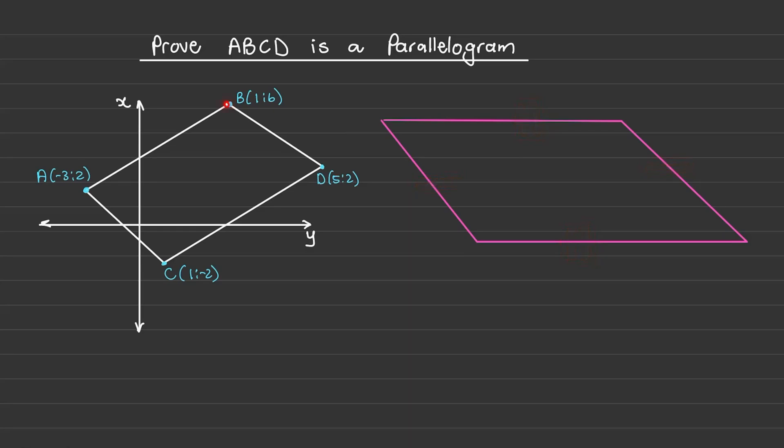We can use the distance formula to prove that the opposite sides are equal in length. You also know that the opposite sides of a parallelogram are parallel to each other. So you can use gradients to prove that the opposite sides of the given quadrilateral are parallel to each other.